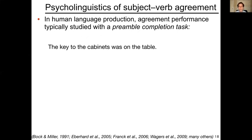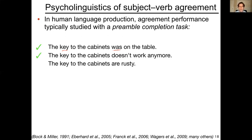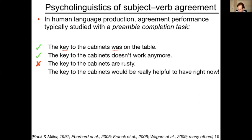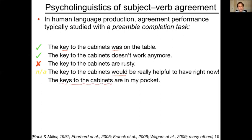Completions might be of the following types. 'The key to the cabinets was on the table' — the verb 'was' agrees with the main clause subject, so this is a correct trial. 'The key to the cabinets doesn't work anymore' — also correct. 'The key to the cabinets are rusty' — this is an incorrect trial. 'The key to the cabinets would be really helpful' — 'would' is a modal verb that doesn't distinguish singular or plural agreement, so this is non-applicable. 'The keys to the cabinets are in my pocket' — this is a miss-recapitulation of the preamble, also non-applicable.